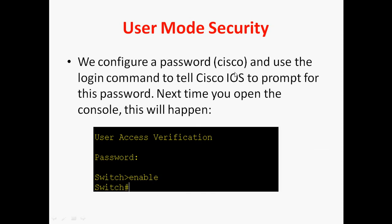We configured password 'cisco' and used the login command. The login command tells Cisco IOS to prompt for this password. So the password we set is 'cisco'. The next time you open the console, it will ask for a password. You type 'cisco' and only then will it enter user mode. When you are typing the password, it won't show anything on screen. Then you can type 'enable' to go to privilege mode.